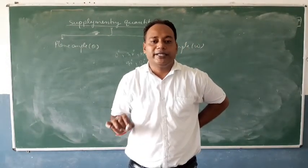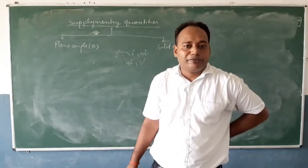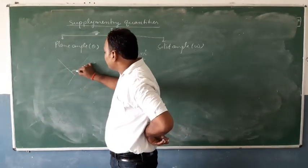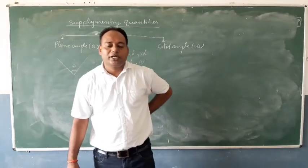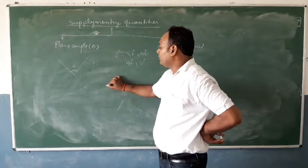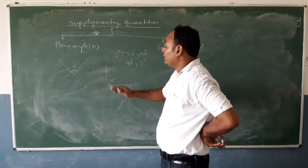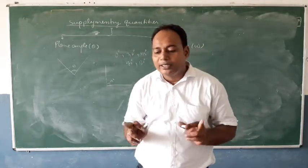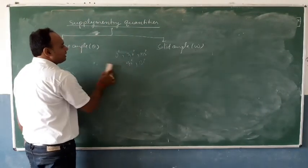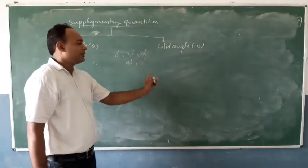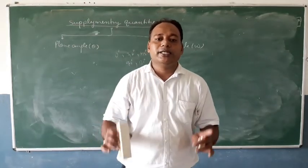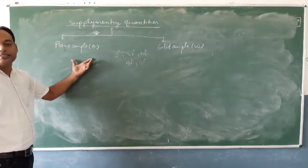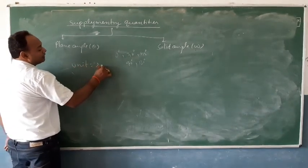All such angles are called plane angles. The basic definition of plane angle is: it is the angle between two lines. If I have one line and another line, the angle between those two lines is called the plane angle. The unit of plane angle is the radian.